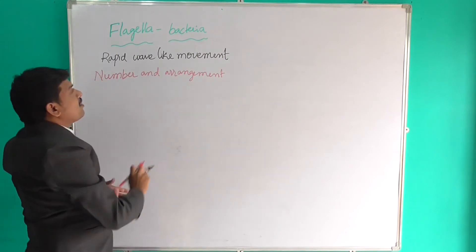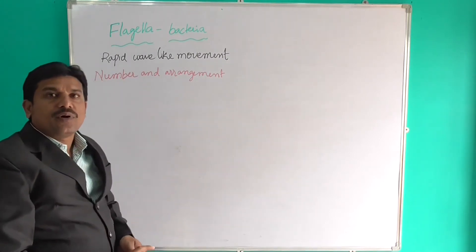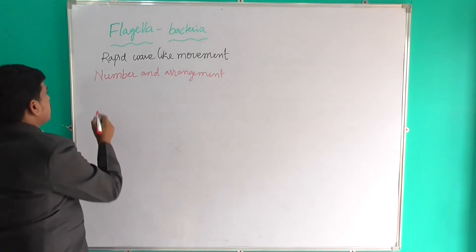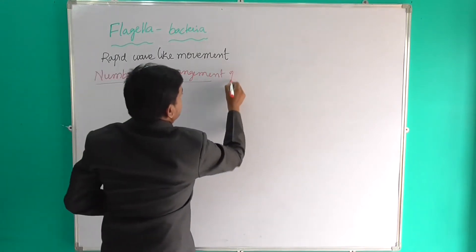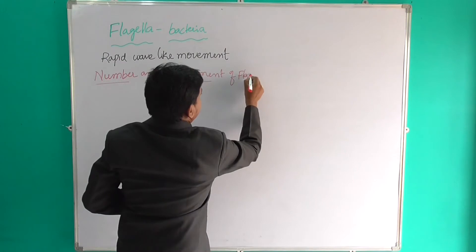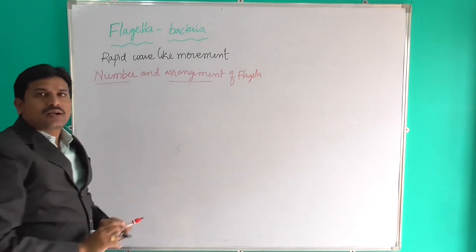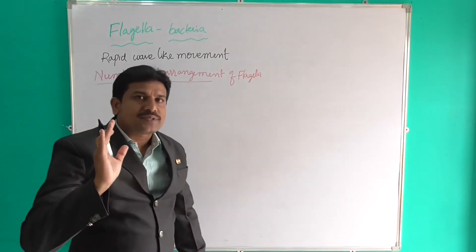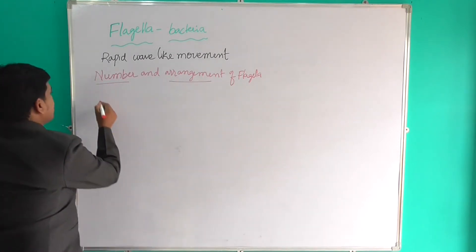Based on the number and arrangement of flagella, bacteria are classified into four types. Let us see what these four types are.